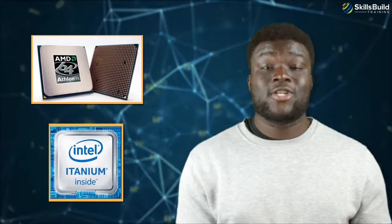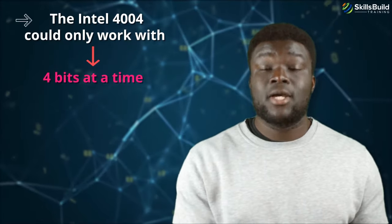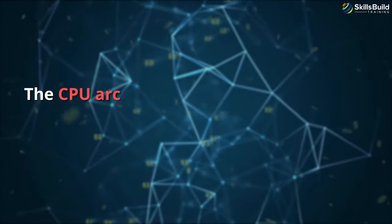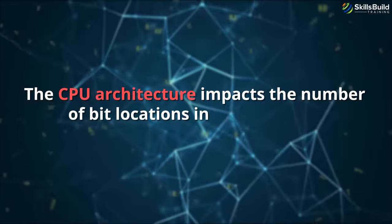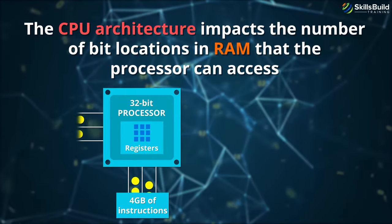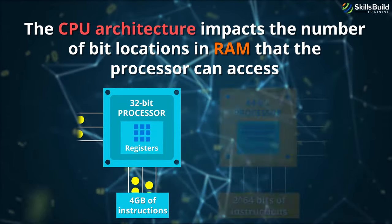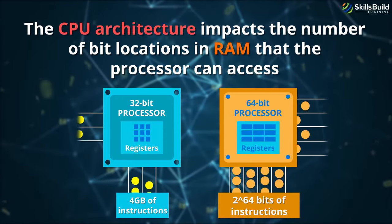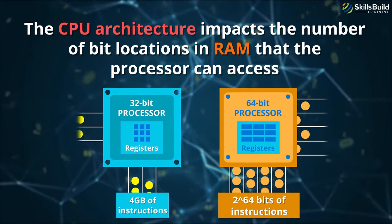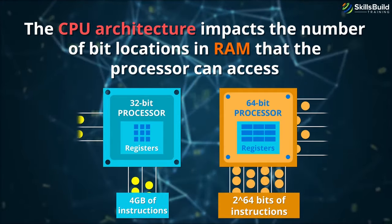Over the last two decades, 64-bit architecture processors have become the norm. 64 bits are the number of bits the processor can process at the same time. If the Intel 4004 could only work with 4 bits at a time, a 64-bit processor can deal with 64 bits at a time. The CPU architecture impacts the number of bit locations in RAM that the processor can access. So that means 32-bit architecture was limited to 4GB of instructions, and 64-bit can theoretically manage up to 2 to the power of 64 bits. That is 18 exabytes or around 18 million terabytes, an immense leap.